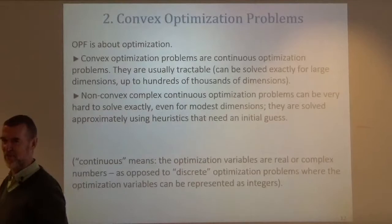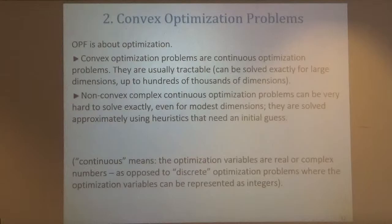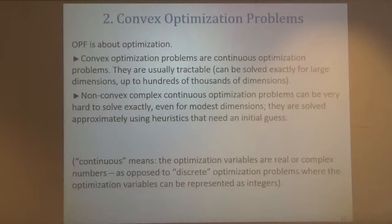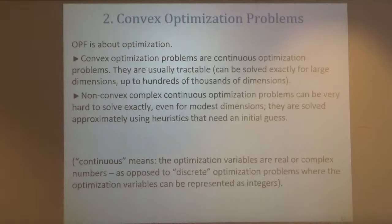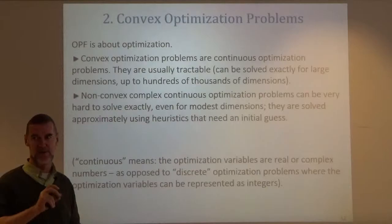The world of optimization is divided according to two criteria. There are easy — good — problems and bad problems. The good problems are continuous and convex. Continuous means the optimization variables are real or complex numbers, as opposed to discrete, which are integers or binary variables. Discrete problems typically lead to combinatorial problems of exponential complexity, and solving them puts us in the world of NP-hard problems. We will find some of this in the OPF when we talk about unit commitment.